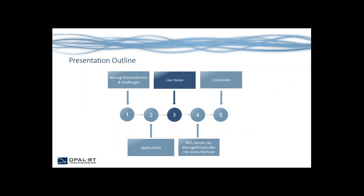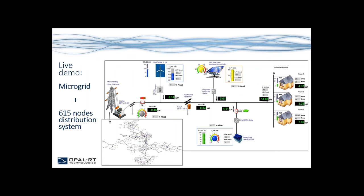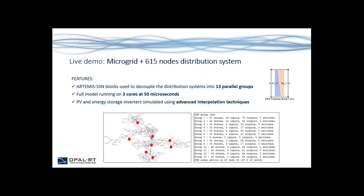We are now ready for our live demo. Today we're presenting a microgrid system attached to a 615-node distribution system. The main features are that Artemis SSN blocks are used to decouple the distribution system into 13 independent parallel groups. The full model runs on three cores at 50 microseconds, and the PV and energy storage inverters are simulated using advanced interpolation techniques. I will now pass to my colleague Amin Yaman for the demo.